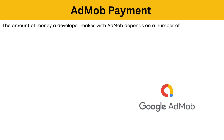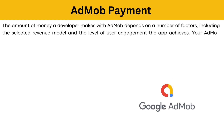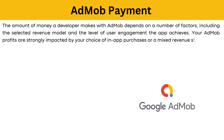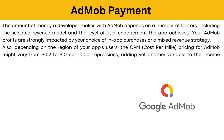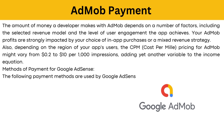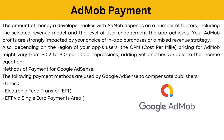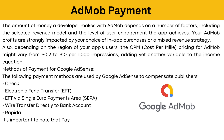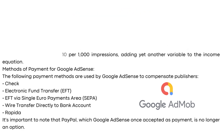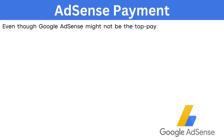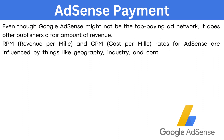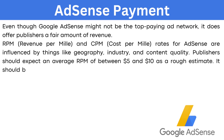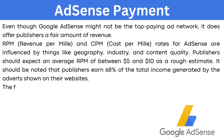Who pays more — AdMob or AdSense? AdMob payments: the amount of money a developer makes with AdMob depends on factors including the selected revenue model and the level of user engagement the app achieves. Depending on the region of your app's users, the CPM pricing for AdMob might vary from 0.2 cents to $10 per 1,000 impressions. Methods of payment for Google AdSense include check, electronic fund transfer (EFT via single year repayment area), wire transfer directly to bank account, and Rapida — note that PayPal is no longer an option. AdSense payments: RPM and CPM rates for AdSense are influenced by geography, industry, and content quality. Publishers should expect an average RPM between $5 and $10 as a rough estimate, and publishers earn 68% of the total income generated by adverts shown on their websites.